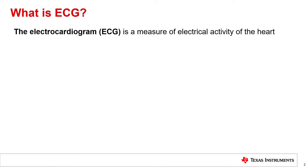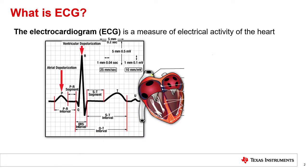ECG stands for electrocardiogram, which is an electrical measurement of the activity in the heart. The heart is responsible for maintaining adequate blood flow through the body in order to deliver oxygen and nutrients while removing carbon dioxide and waste. As the oxygenated blood returns from the systemic circuit, i.e., the body, it must pass through the heart on its way to the pulmonary circuit, i.e., the lungs. This is where carbon dioxide is exchanged for oxygen.